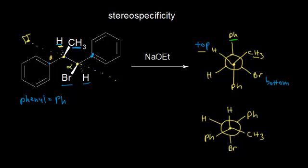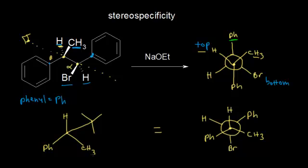We could just use our Newman projection, but sometimes it's easier to draw the sawhorse projection as well. So let's draw this out as a sawhorse projection. Our front carbon would end up like this, and our back carbon would end up like a Y. There is a hydrogen, a phenyl group, and a methyl group on my front carbon. On my back carbon there is a hydrogen, a phenyl group to the right, and our bromine going down. Now that we have our sawhorse projection and our Newman projection, we're all set to draw our product.